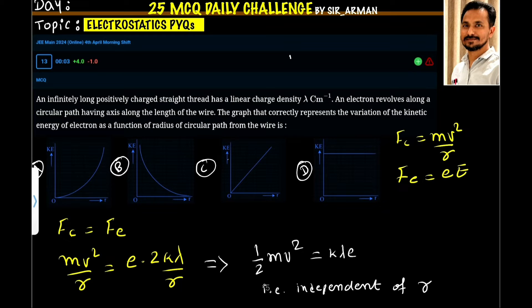Let us assume we have this kind of wire and around this wire the electron is revolving. And why is electron revolving? Because due to the electric field of this wire. So the centripetal force is provided by the electric field of the wire.